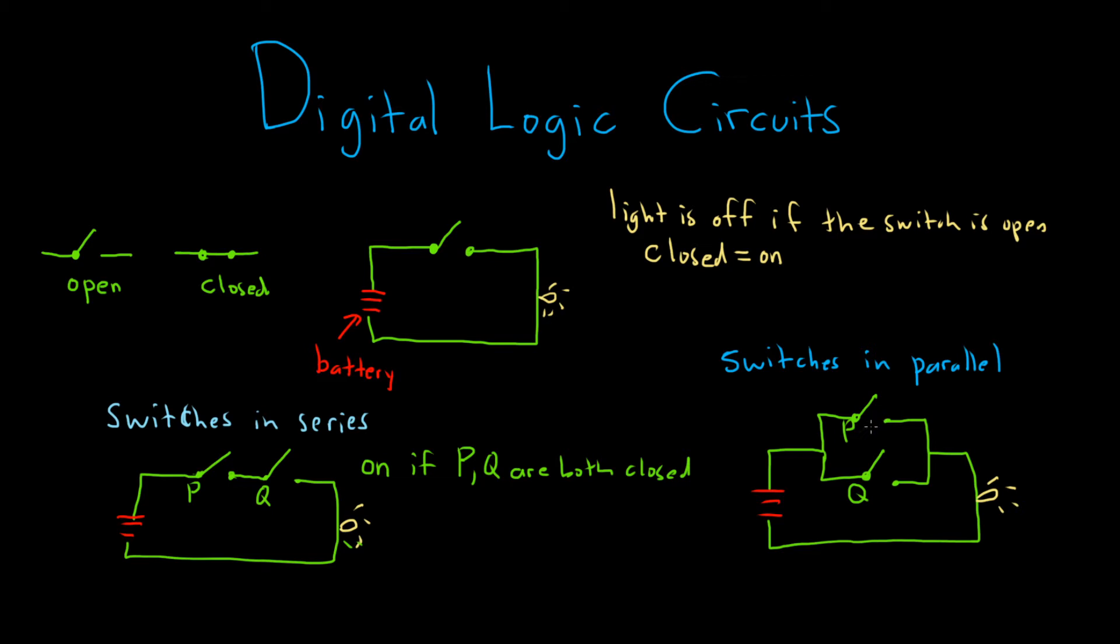And these are said to be switches in parallel. So as long as one of these is closed, we'll be able to turn the light on. So at least one has to be closed. So it's on if at least one is closed. So if you think about the mathematical logical symbol that relates to this, that would be the OR, right? P or Q is true if at least one is true. So already you can see we can describe switches in series by using AND, and we can describe switches in parallel by using OR.